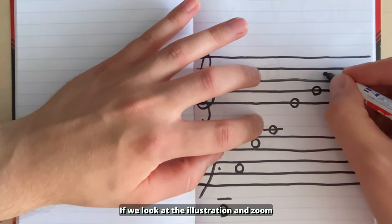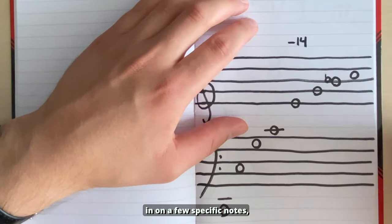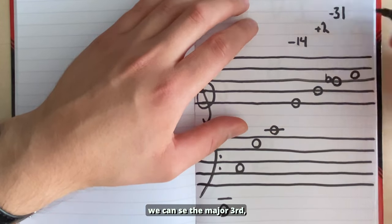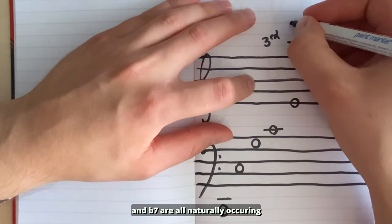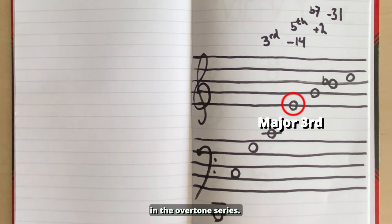If we look at the illustration and zoom in on a few specific notes, we can see the major third, pure fifth, and flat seventh are all naturally occurring in the overtone series.